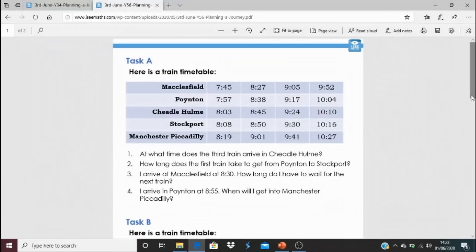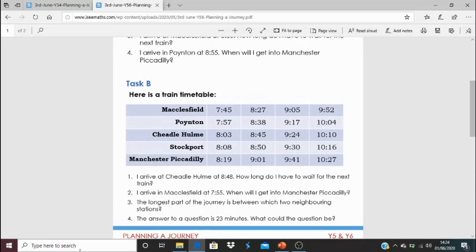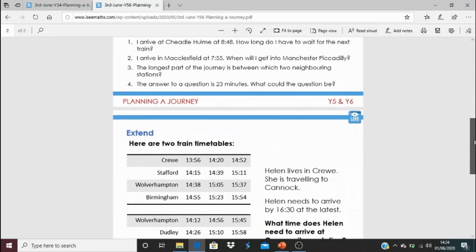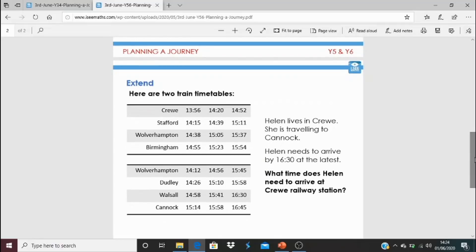For today's task, click on the blue link underneath the video. We've got questions around this timetable from the northwest of England: Macclesfield, Poynton, Cheadle Hulme, Stockport, Manchester Piccadilly. Have a go at those with Task A. Task B, one of the questions is: the answer to a question is 23 minutes. What could the question be? You're going to have to look at that timetable and think what the question could be. There are different possible questions there.